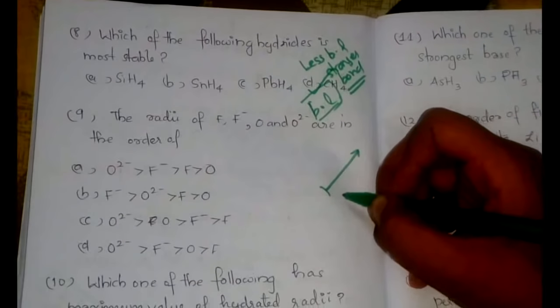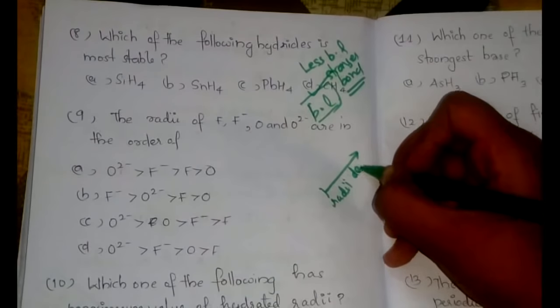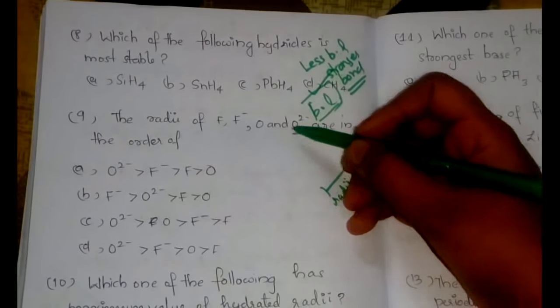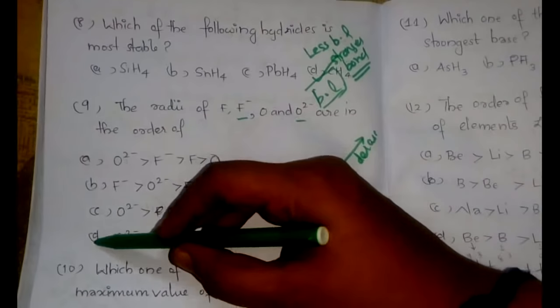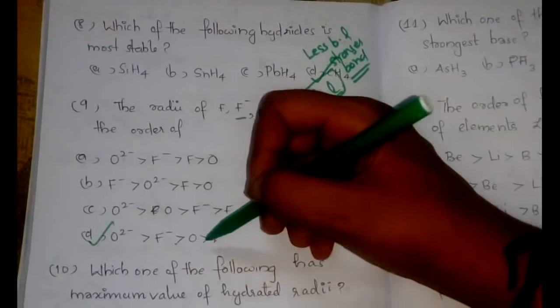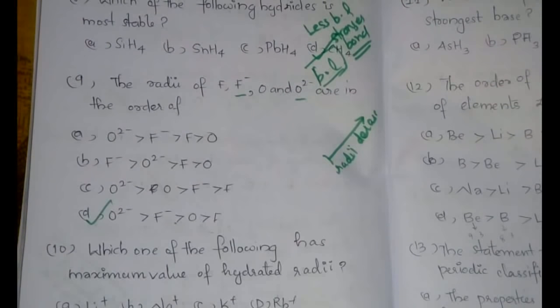The ninth question: the radius of F, F-, O, and O2- are in which order? If there are more electrons, the radius will be increasing. So O2- and F- are definitely having more radius than O and F. Also, from left to right across the period, radii decrease. Since O2- and F- are isoelectronic, O2- would be greater than F-, and both would be greater than the neutral species O and F.